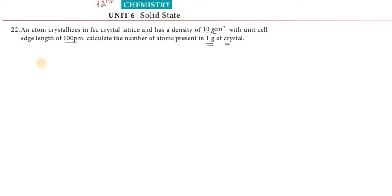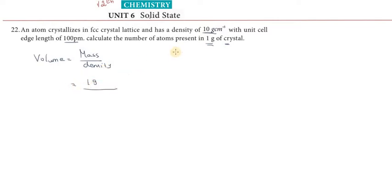First, we calculate the volume using the formula: volume equals mass divided by density. So, volume equals 1 gram divided by 10 grams per centimeter cube, which gives us 0.1 centimeter cube. This is the total volume of 1 gram of the crystal.